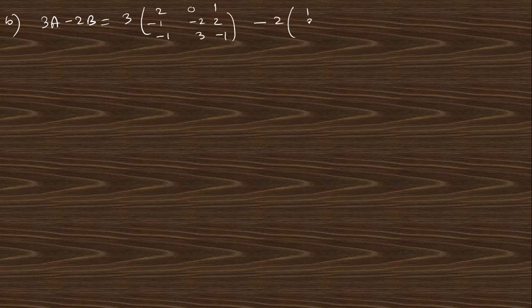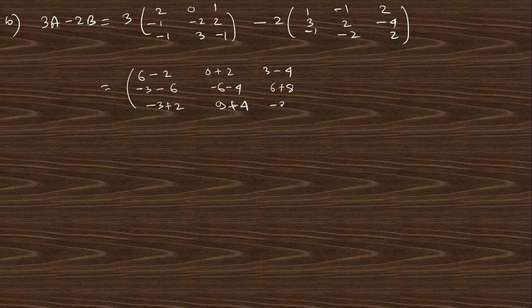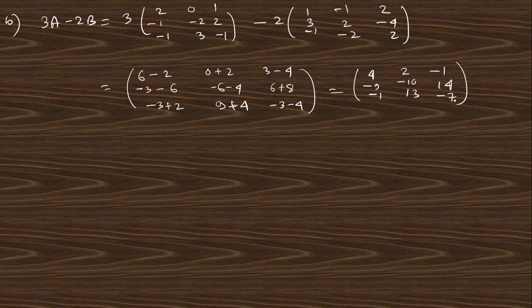Now for part B with 3x3 matrices: 3A - 2B, where A is [2, 0, 1; -1, -2, 2; -1, 3, -1] and B is [1, -1, 2; 3, 2, -4; -1, -2, 2]. Multiplying and subtracting gives: [4, 2, -1; -9, -10, 14; -1, 13, -7]. Wait — the final result is [4, 2, -1; -9, -10, 13; -1, 14, -7].